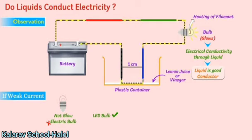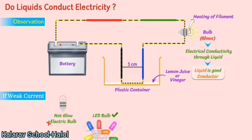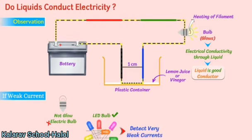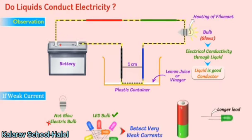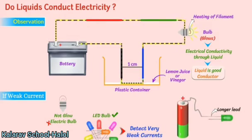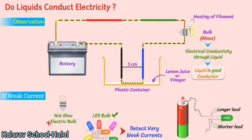LED bulbs are available in a variety of colors and are capable of detecting very weak currents. The longer lead is always connected to the positive terminal of a battery, and the shorter lead is connected to the negative terminal.